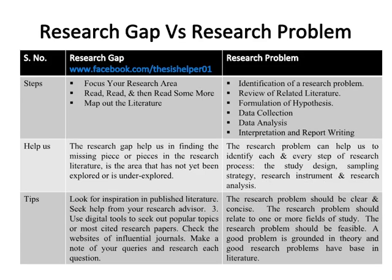Steps in identifying a research problem are: identification of a research problem, review of related literature, formulation of hypothesis, data collection, data analysis, interpretation, and report writing. The research gap helps us find the missing piece or pieces in the research literature — the area that has not yet been explored or is underexplored. The research problem can help us identify each and every step of the research process.